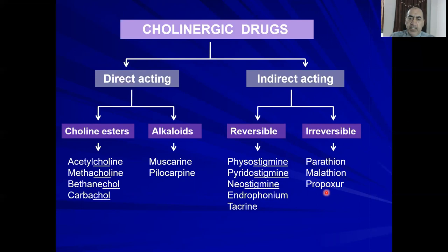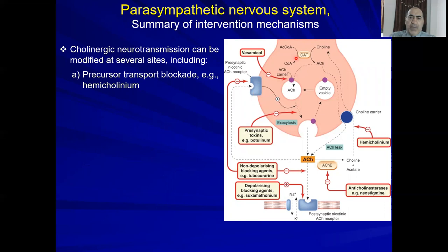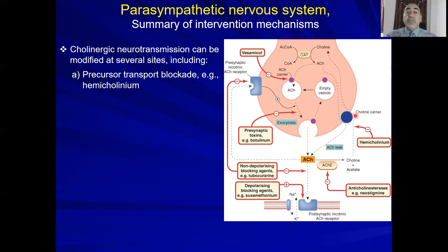Reviewing the cholinergic transmission process: acetylcholine enters the synaptic vesicle via a choline carrier, is stored in the vesicle, then released and acts on the receptor. Scientists exploit these steps to develop drugs. First, precursor transport blockade: hemicholinium inhibits the choline carrier (Carrier A), preventing choline from entering the synaptic vesicle.